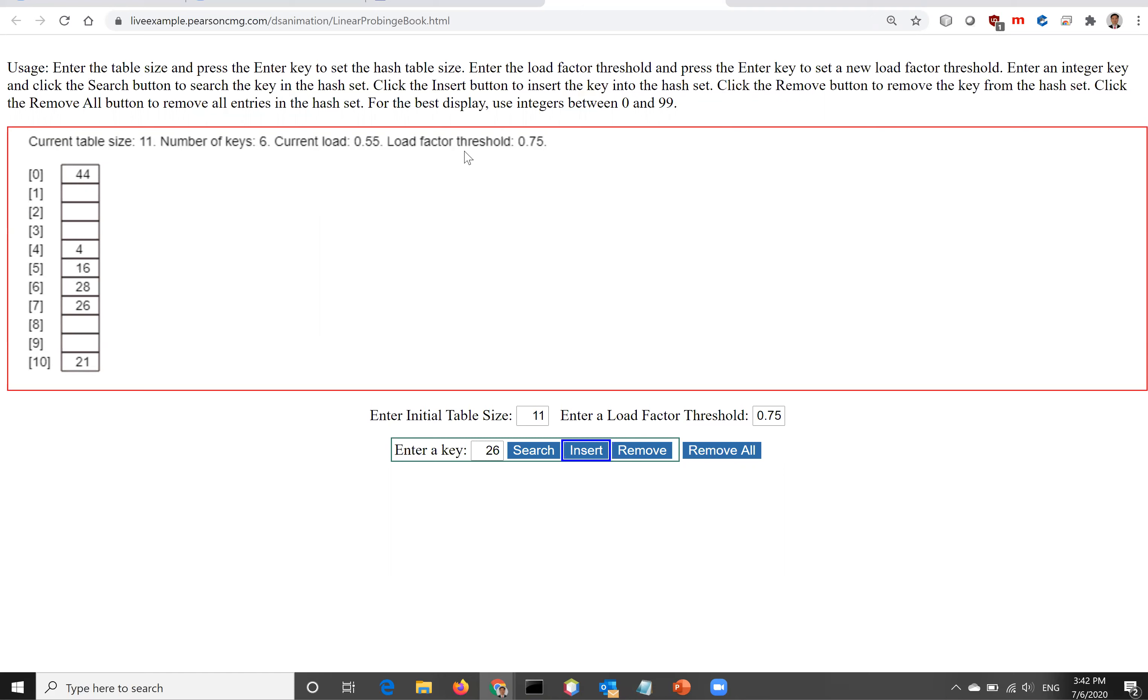There's a load factor threshold at 75%. That means the maximum you can have is 75%. If you have more keys to put into the table that exceeds the threshold, then you have to perform internally, increase the size of the table and rehash the keys.